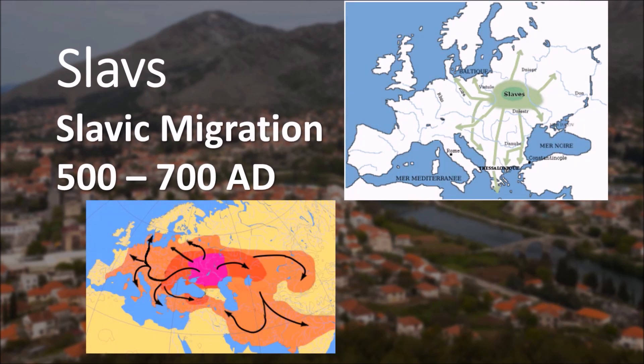People who speak Bosnian are Slavs. Who are Slavs? Slavs were migrants who came to Bosnia, Croatia, Serbia, and Southern Europe from Russia and Ukraine, slowly migrating south toward the Mediterranean, and they settled in the Balkans — in Bosnia, Croatia, Serbia and that region.